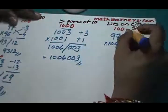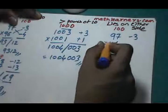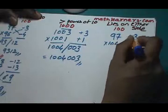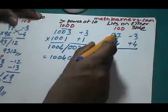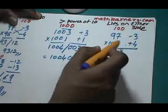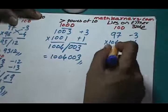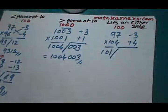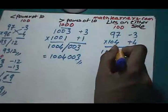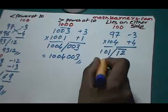As 97 is 3 less than 100, that can be written as minus 3. 104 is 4 greater than 100, plus 4. Cross addition: 97 plus 4 or 104 minus 3 will give 101 slash. Multiplication of right hand side gives minus 12, so that can be written as bar 12. This equals 101 bar 1 bar 2.